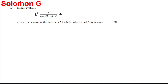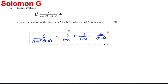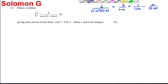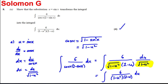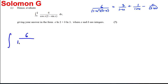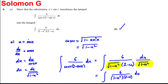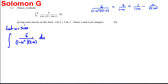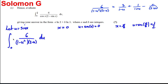The last part: hence evaluate the definite integral. From part a, this integral transforms to the integral of 6 over (1−u²)(2−u) du with the substitution u = sin x. We need to change the limits: when x = 0, u = sin 0 = 0; when x = π/6, u = sin(π/6) = 1/2. So the limits change to 0 and 1/2.